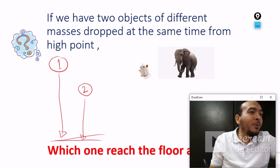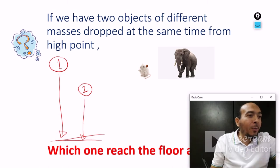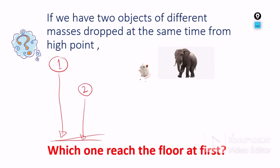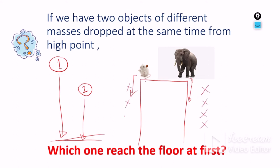All of these results happen because of gravity. It doesn't matter how much mass an object has or what material it is made of. If we release both the elephant and mouse from the same level, the elephant reaches first — not because of mass, but because of air resistance. The air exerts more force on the mouse relative to its weight. If we remove all the air, all objects reach the ground at the same time.